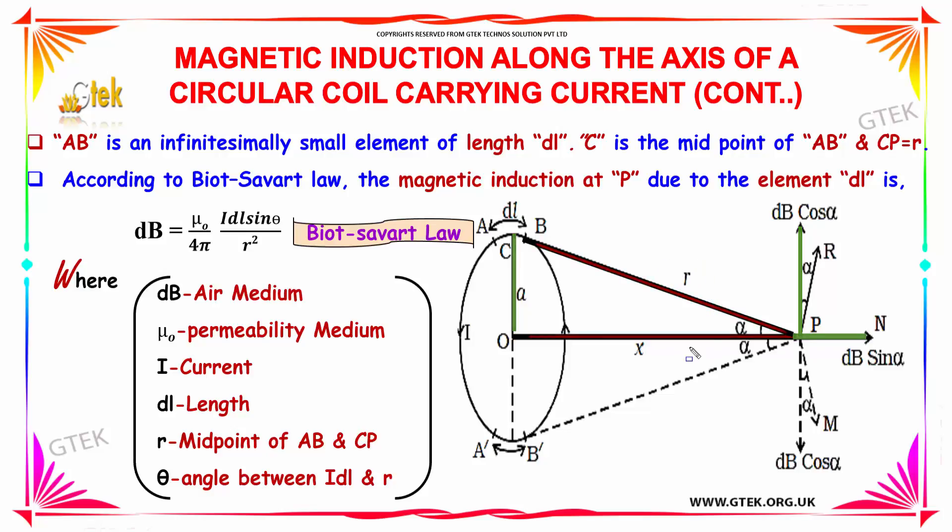According to Biot-Savart law, the magnetic induction at point P due to the element dl is considered as dB is equal to mu0 by 4 pi into i into dl sin theta by R square. It is nothing but your Biot-Savart law.